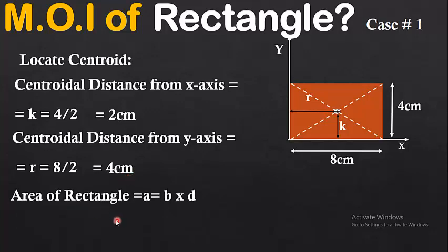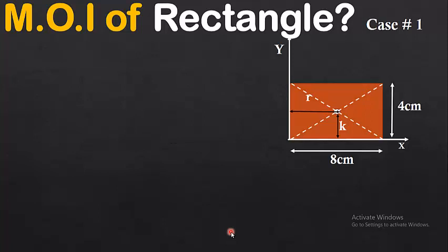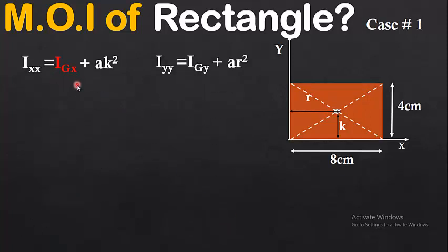The area of the rectangle is A = b × d = 8 × 4 = 32 cm². We have now found three values: k = 2 cm, r = 4 cm, and area A = 32 cm². The next step is to apply the parallel axis theorem formula.